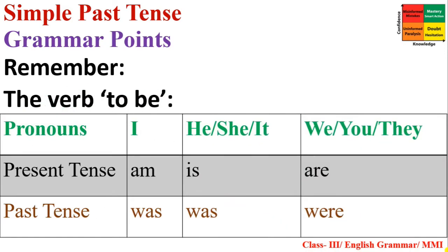The verb 'to be': with 'I,' use 'am' for present and 'was' for past. With 'he,' 'she,' or 'it,' use 'is' for present and 'was' for past. With 'we,' 'you,' or 'they,' use 'are' for present and 'were' for past.